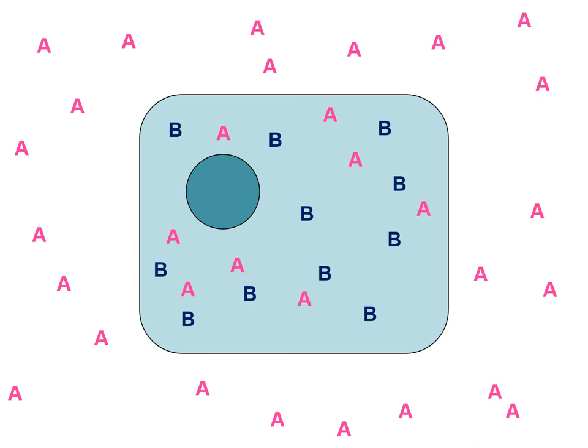The same thing is true with isoosmotic solutions — depending on how much material moves through, they can be isotonic or hypotonic, but not hypertonic. Hyposmotic solutions can never be iso- or hypertonic because they always have less concentration than the inside of the cell. So for iso- and hyperosmotic solutions, the key question is how penetrating the solute is.